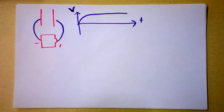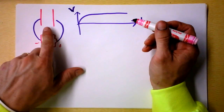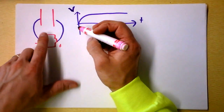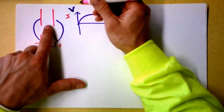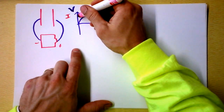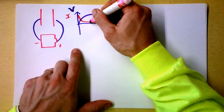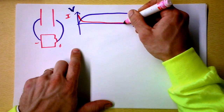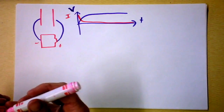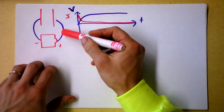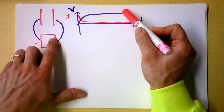If I also want to know what's happening to the current: the current immediately will be very large. As soon as I connect that, there'll be a huge current, and then the current will taper off and approach zero. These two quantities are acting very differently — the current in this circuit is falling to zero, and the voltage will be rising up.